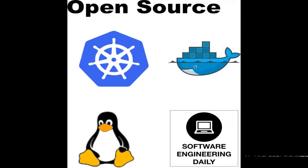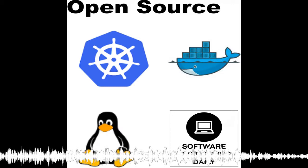On today's episode, we talk about strategies for Git, including branching, merging, continuous integration, and software as a service. He also contrasts Git with several of the other version control technologies.